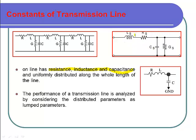Inductance and resistance both are considered as series parameters in the transmission line, whereas capacitance and conductance are both considered as parallel parameters in the transmission network. When comparing all four of these parameters, we need to decide which ones can be simplified or neglected.